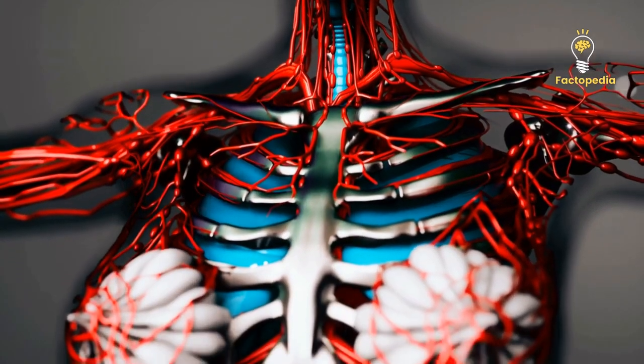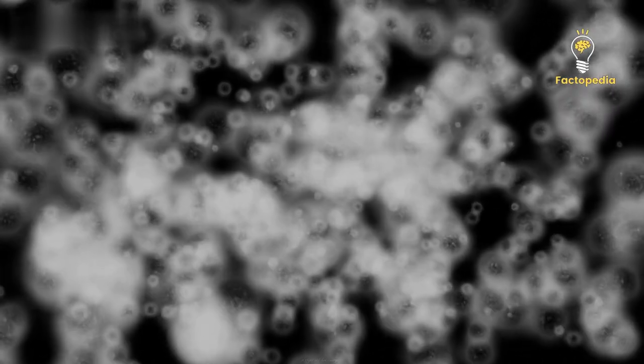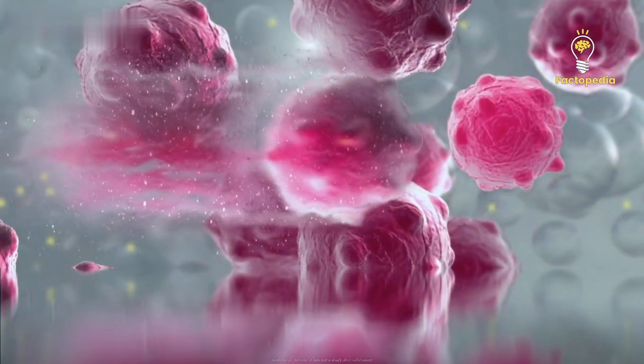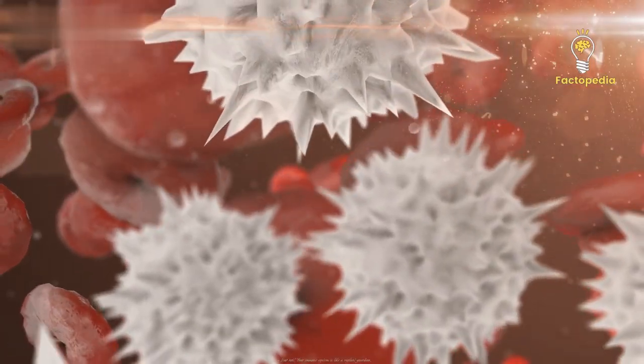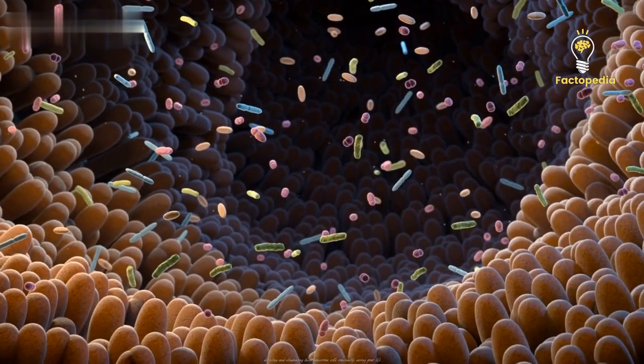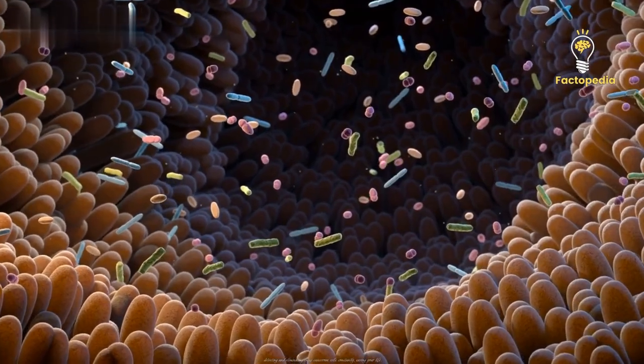Somewhere in your body, right now, a rogue cell has emerged, harboring the potential to turn into a deadly force called cancer. But fear not. Your immune system is like a vigilant guardian, detecting and eliminating these cancerous cells constantly, saving your life.